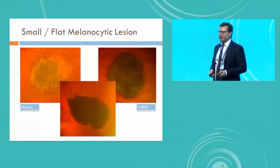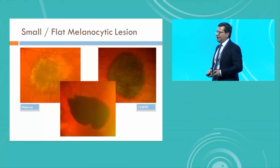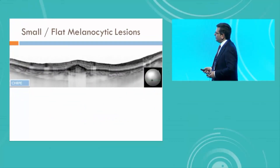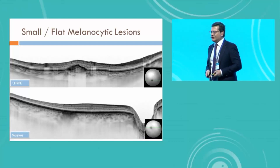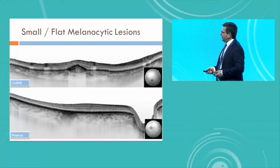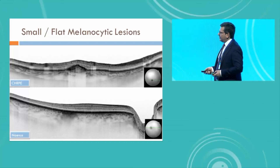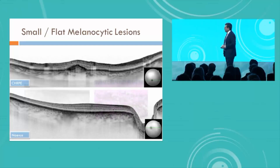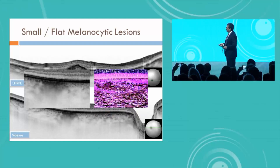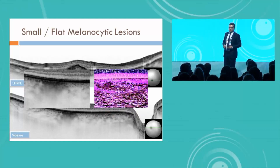Sometimes you're not really sure what it is, and if you apply an OCT, then you see that in the case of a hypertrophy of the RPE, the lesion is confined to the RPE. Whereas if you have a nevus, then something is only in the choroid — distributed in the choroid. This is a hyper-reflective band you see within the choroid for the nevi.